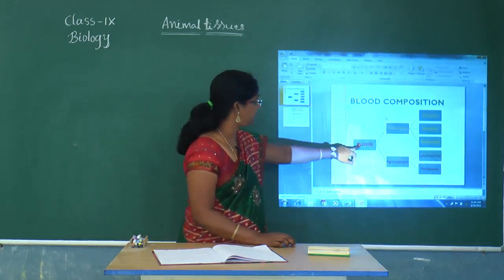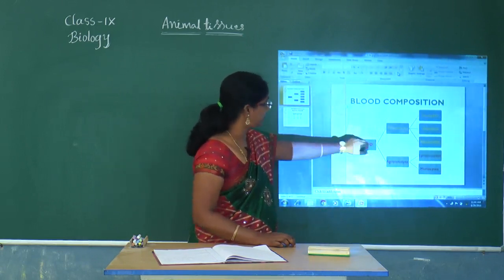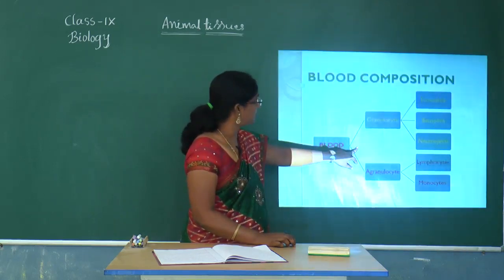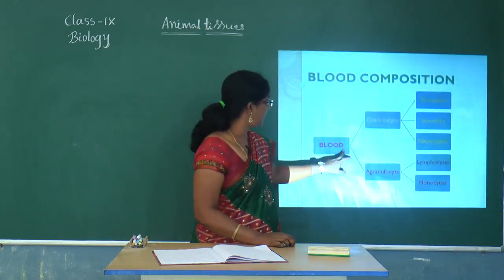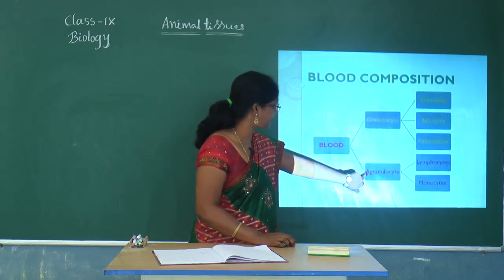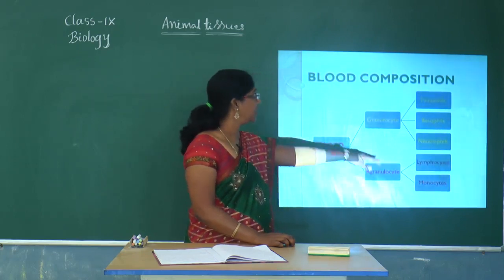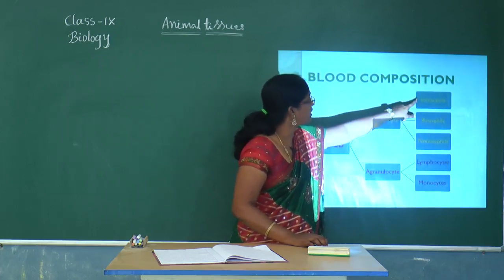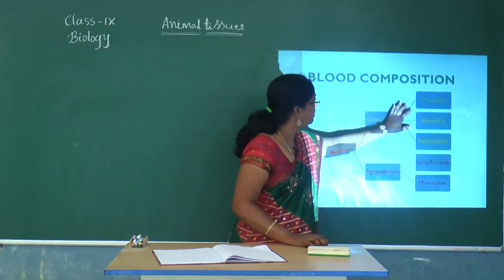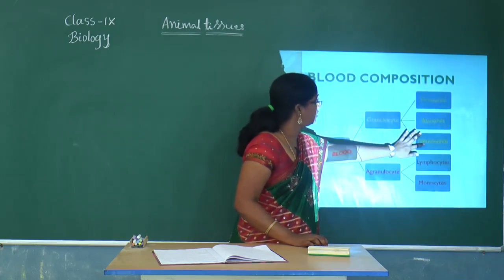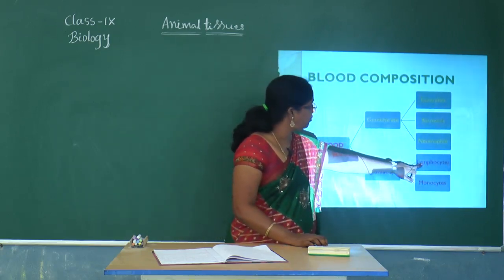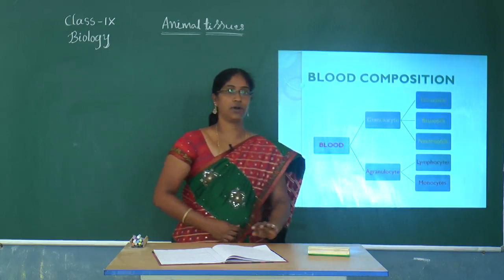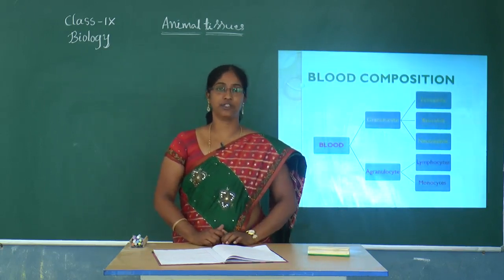Blood cells are classified based on granules: granulocytes and agranulocytes. Granulocytes have grain-like projections in the cytoplasm, while agranulocytes do not. Granulocytes are further divided into eosinophils, basophils, and neutrophils — named based on the dye they react to during staining. Agranulocytes are divided into lymphocytes and monocytes, which are also called scavengers of the body because they have a killing effect on bacteria.